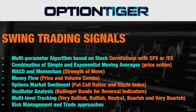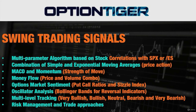Let's talk about the swing trading signals itself. This is a multi-parameter algorithm-based swing trading signal service. We also look at the stock correlations with the SPX or the slash ES, which is the S&P 500 futures. There are different indicators that go into the algorithm — we combine price action indicators, momentum indicators, and a price and volume combo. There is also subjective analysis from the options market sentiment and Bollinger Bands for reversal indicators. The signals identify stocks in five different states: very bullish, bullish, neutral, bearish, or very bearish. You'll see all of this in a live demo at the end of this video.